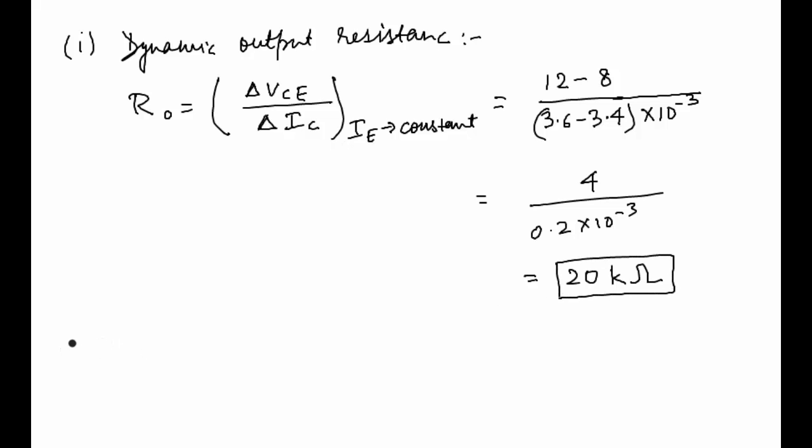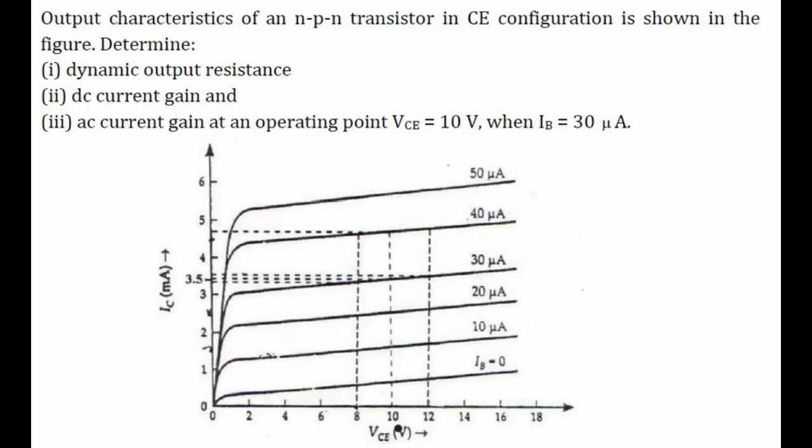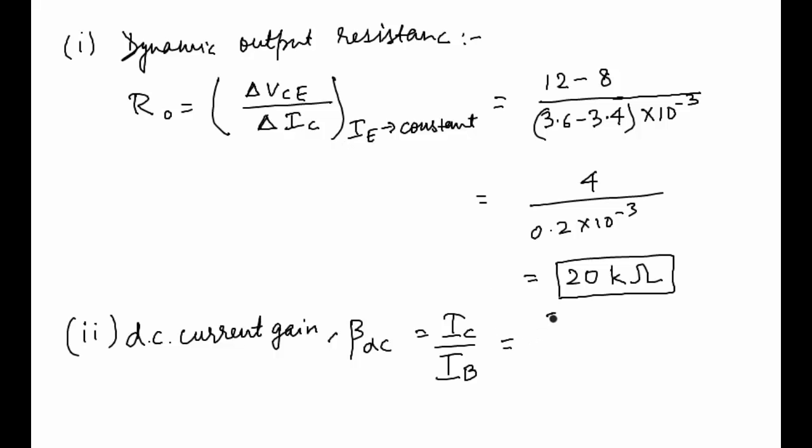Now in the second part we are asked to find the DC current gain, that is βDC. βDC expression is IC divided by IB, and since IB is 30 microamperes, that is this line, and the corresponding IC is 3.5 milliamperes, so this is 3.5 milliamperes by 30 microamperes.